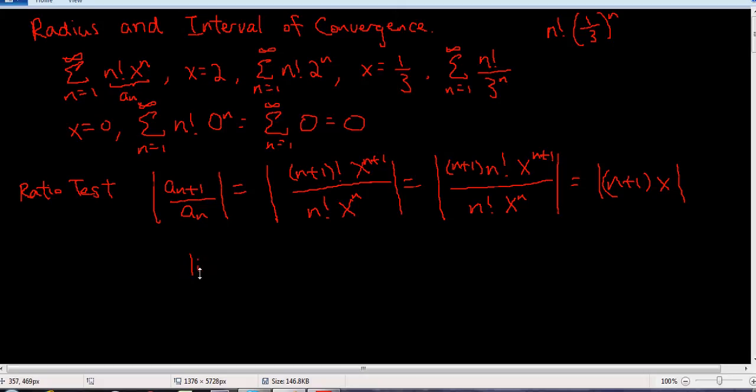So it's n plus 1 times n factorial times x to the n plus 1 over n factorial times x to the n. So this is equal to n plus 1, that quantity, times x. And remember for ratio test, we're interested in what happens as a limit as n goes to infinity of this ratio. And we get this.